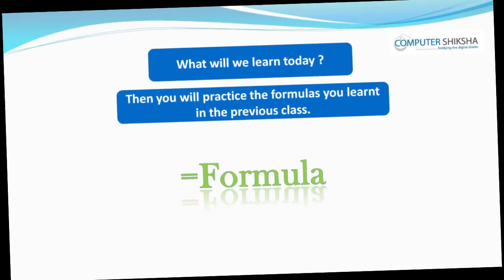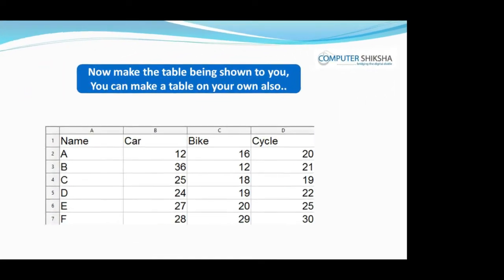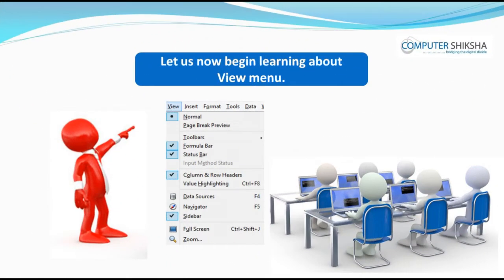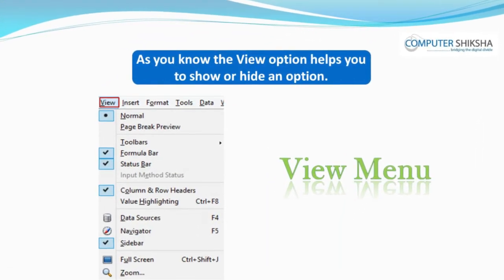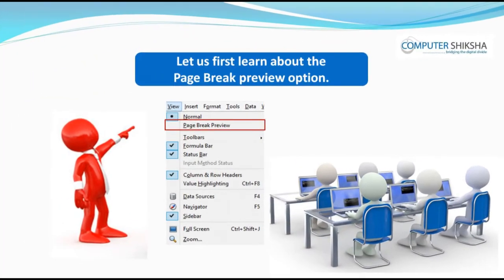Then, you will practice the formulas you learned in the previous class. Now, make the table being shown to you. You can also make a table on your own. Let us now begin learning about the View menu. The view option helps you to show or hide an option. Let us first learn about the page break preview option.